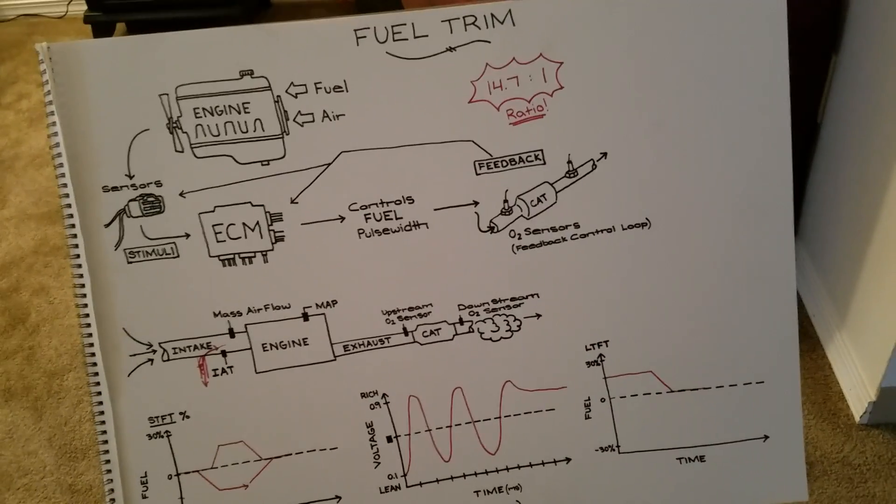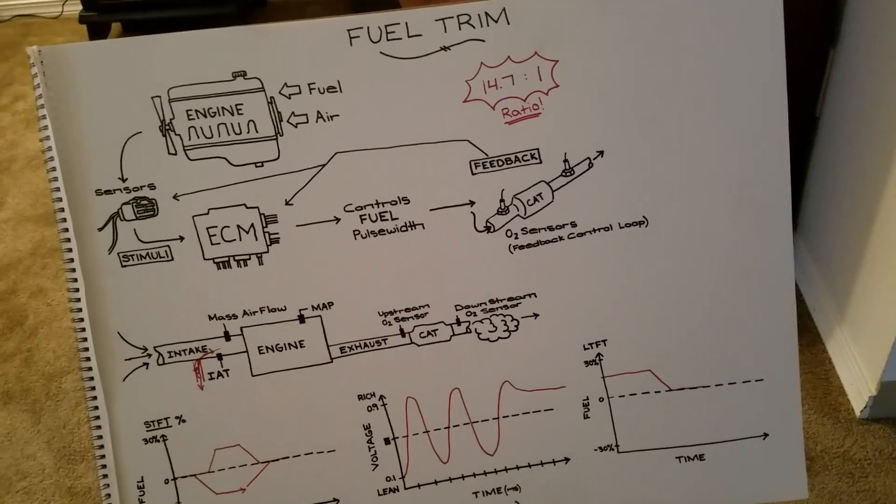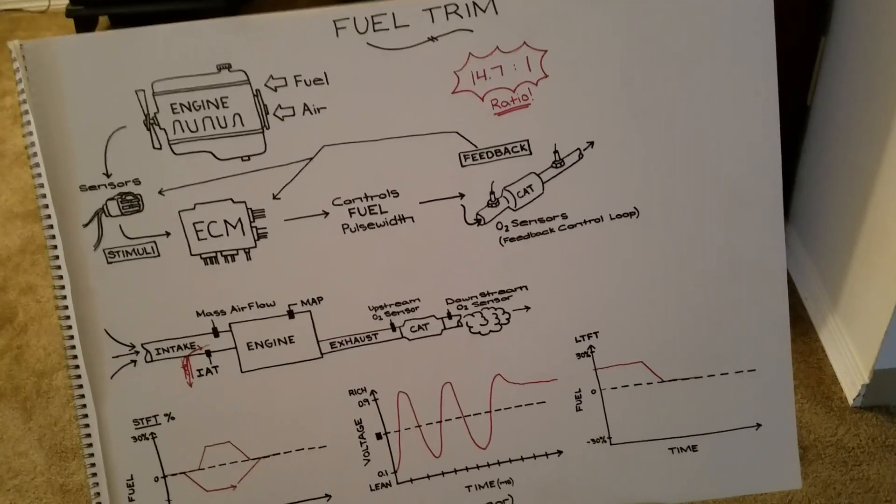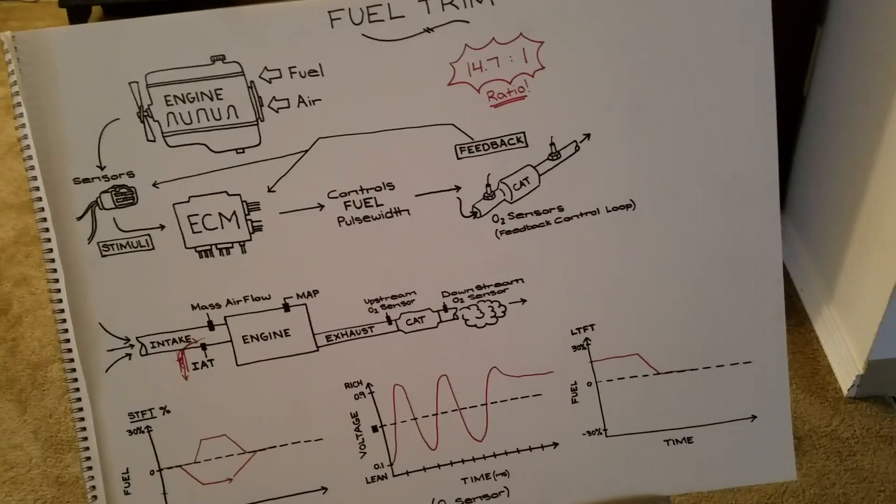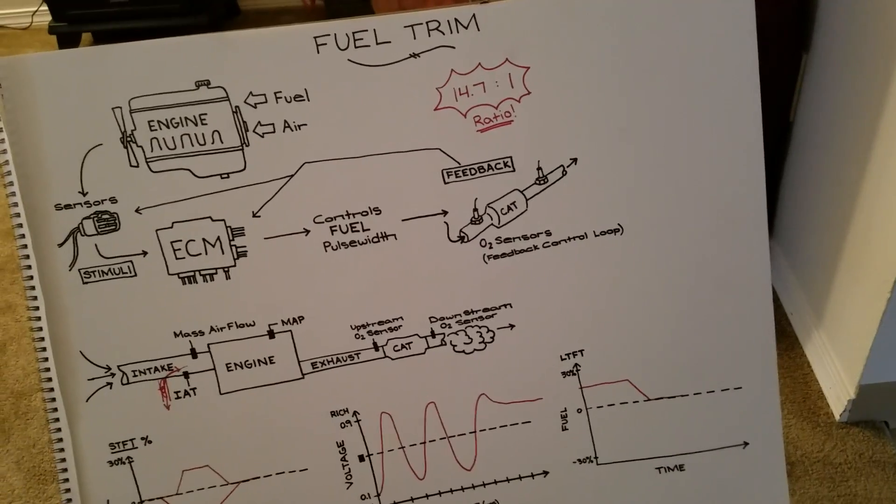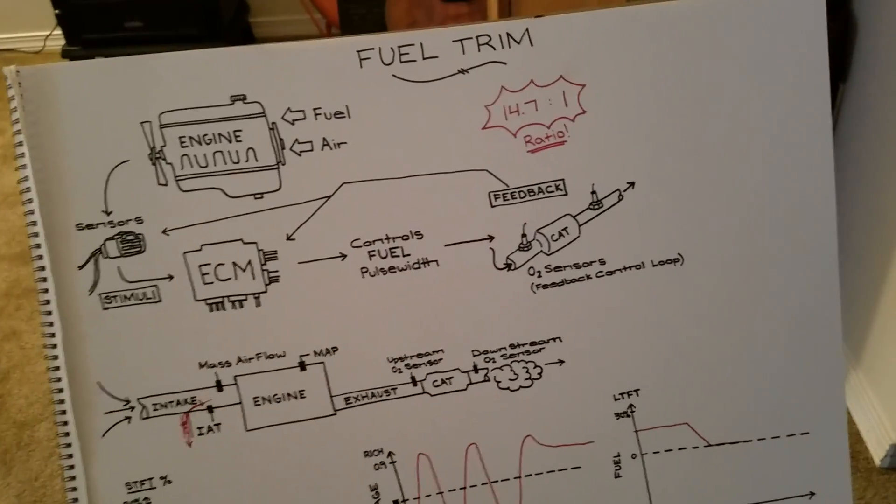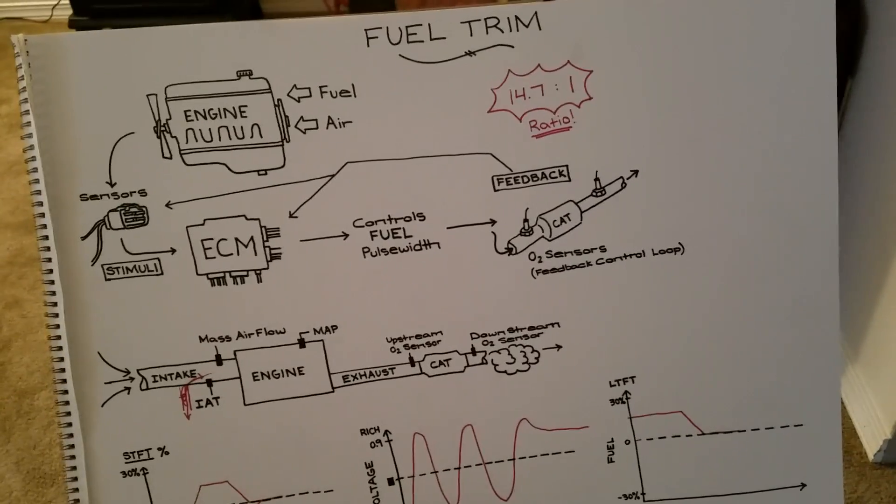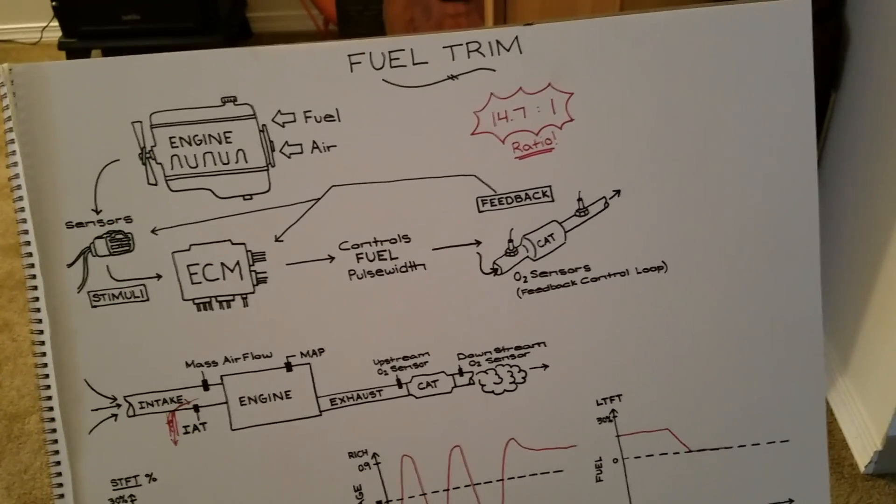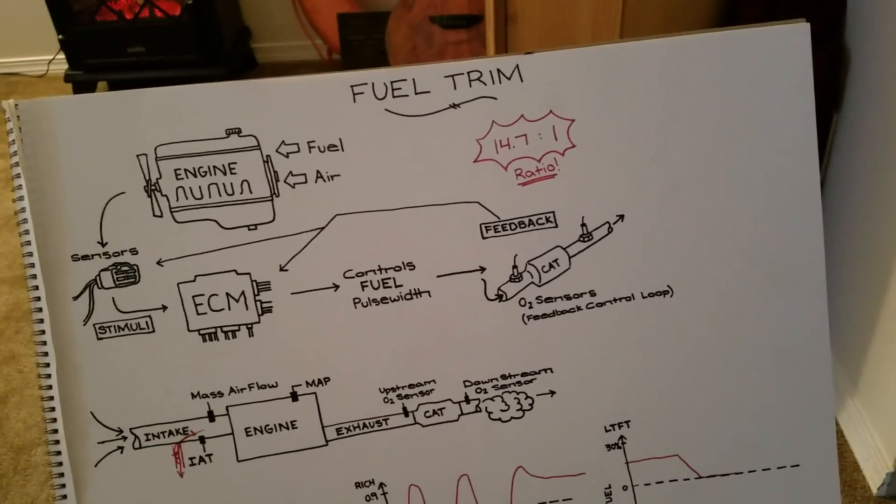As you guys probably know, internal combustion engines require fuel and air to operate. They have found that 14.7 grams of air to 1 gram of fuel really is the best ratio for combustion if you want efficiency, if you want clean exhaust. In today's electronically fuel injected systems, your ECM is programmed to maintain that ratio and it will do essentially whatever it has to do to keep that ratio.